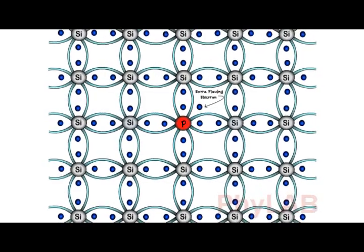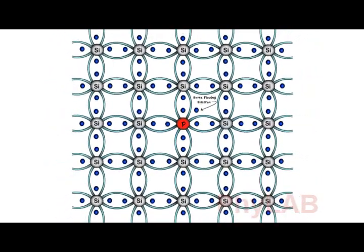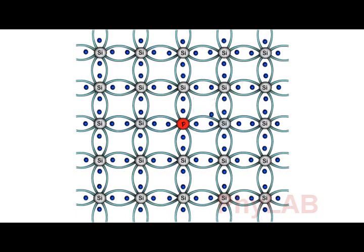Hence, unlike the previous structures, here we get free electrons readily available for conduction. This electron rotates randomly around the phosphorus atom, following a circular motion. In addition to this, the breaking of bonds as seen in the intrinsic semiconductors happens here as well.